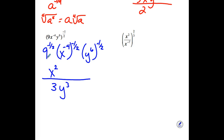Last one — is there anything inside the parentheses you could clean up? Yes: picture bringing those x to the negative 7 up to the top, adding with the x squared already there to get x to the 9th. Power to a power, we multiply: 9 times 2 thirds gives x to the 6th.